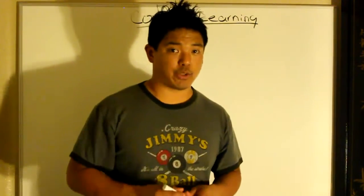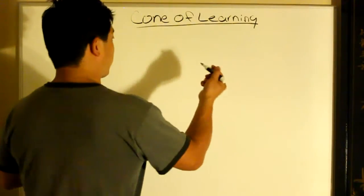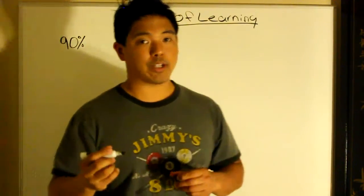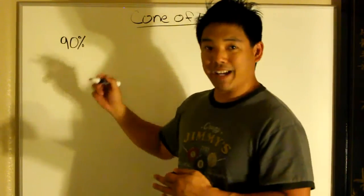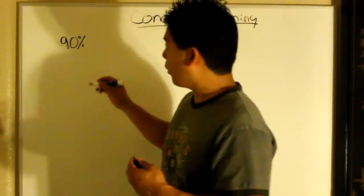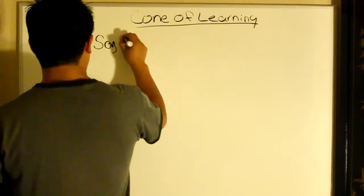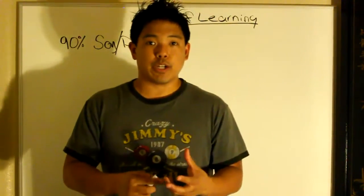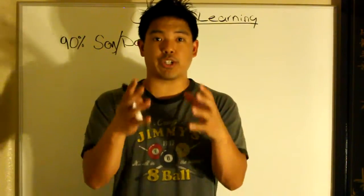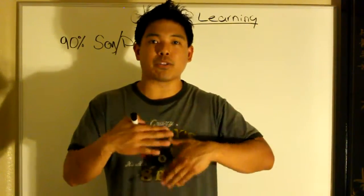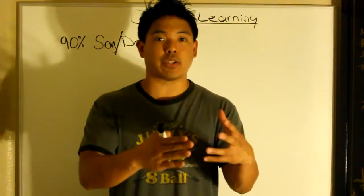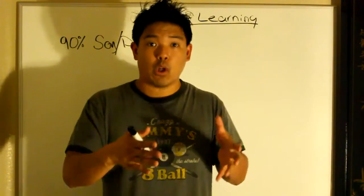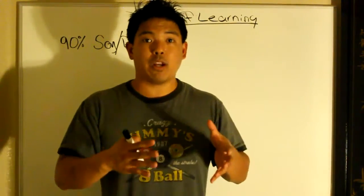So let's break this down into percentages. 90% — in the two-week time span, we will remember 90% of not only what we say but what we say and do. So for example, if we're coaching someone and telling them about the Law of Attraction, and we're also doing this in our own life, 90% of this is going to entail in our life. We're going to remember it, implement it, and become successful.